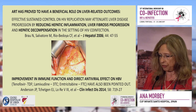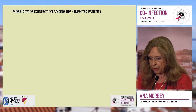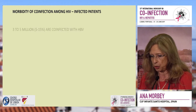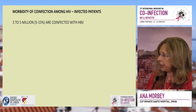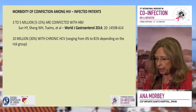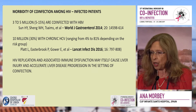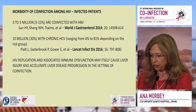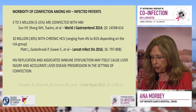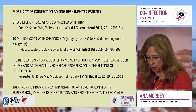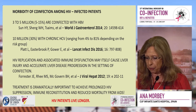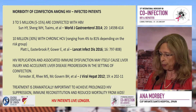Regarding the morbidity of co-infection among HIV-infected patients: three to five million people are co-infected with HIV, and around 10 million — about 30% — have chronic HBV. HIV replication and associated immune dysfunction may itself cause liver injury and accelerate liver disease progression in the setting of co-infection. Treatment is dramatically important to achieve prolonged HIV suppression, immune reconstitution, and reduced mortality from AIDS.